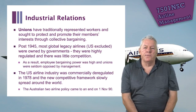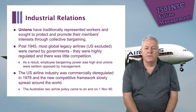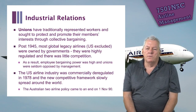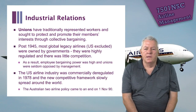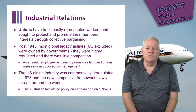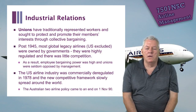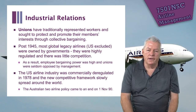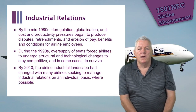Unions have traditionally represented workers and sought to protect and promote their members' interests through collective bargaining. Post-1945, most global legacy airlines — or network airlines — with the exclusion of the United States, were owned by governments. They were highly regulated with little competition, and as a result employee bargaining power was high and unions were seldom opposed by management. When the US airline industry was commercially deregulated in 1978, the new competitive framework slowly spread around the world. The Australian two-airline policy came to an end in November 1990, which changed the industrial landscape for the airline industry in Australia.